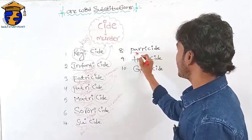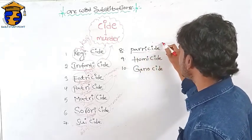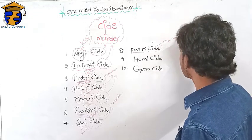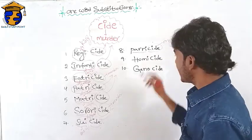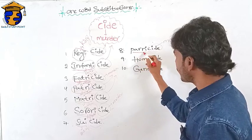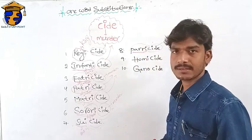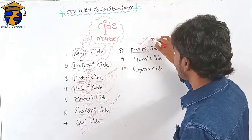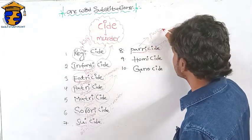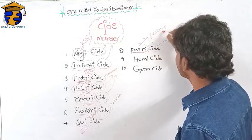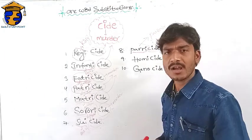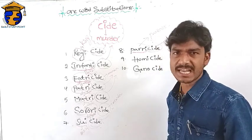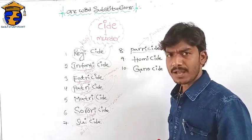Next one: patricide. '-cide' means murder. What is the meaning of 'patri'? 'Patri' means parents. The murder of parents is called patricide.